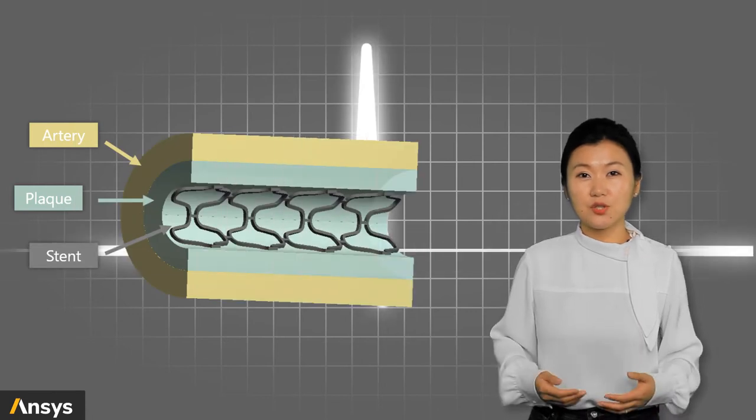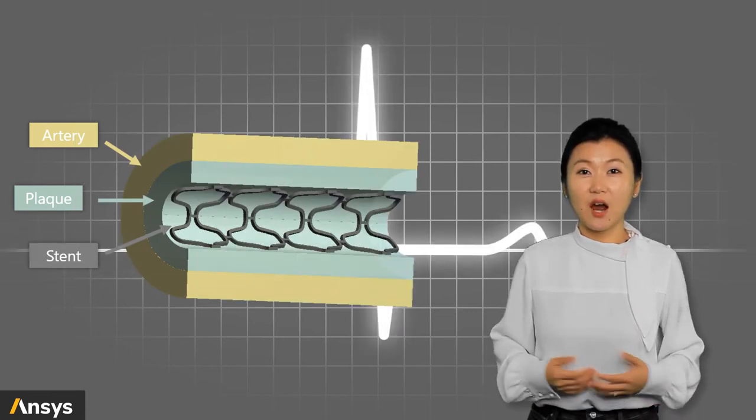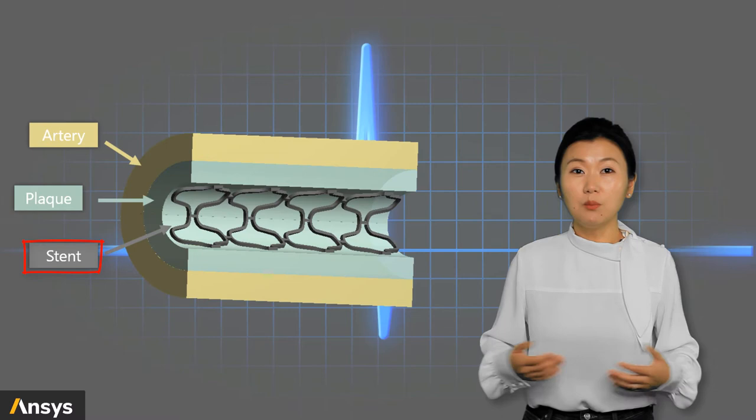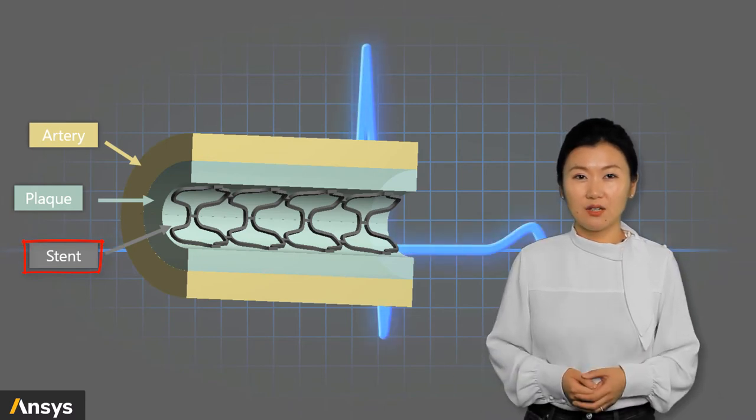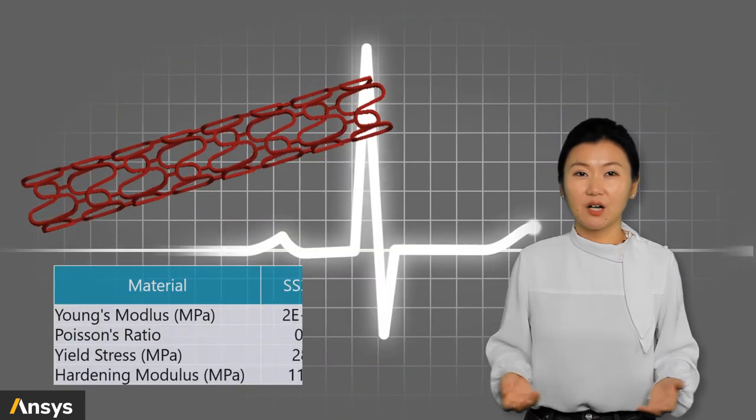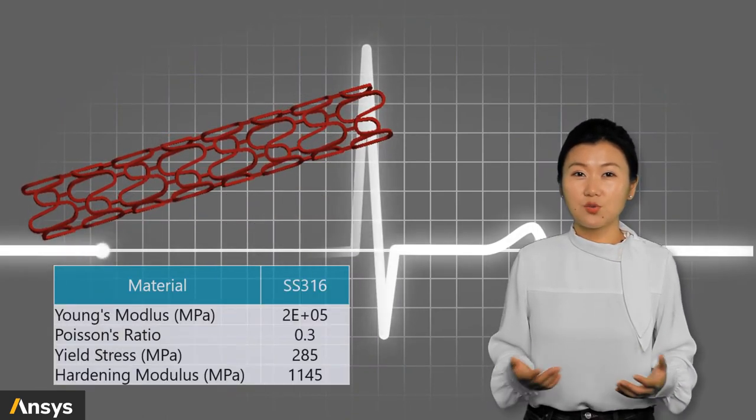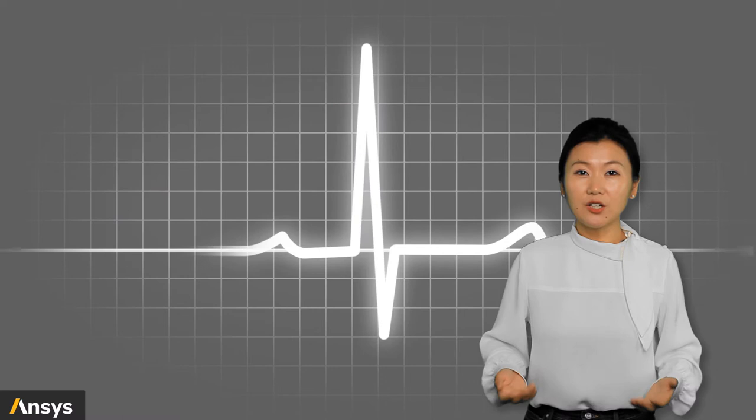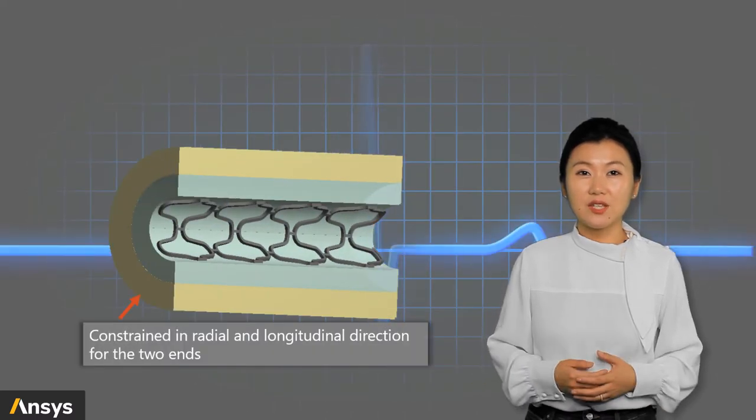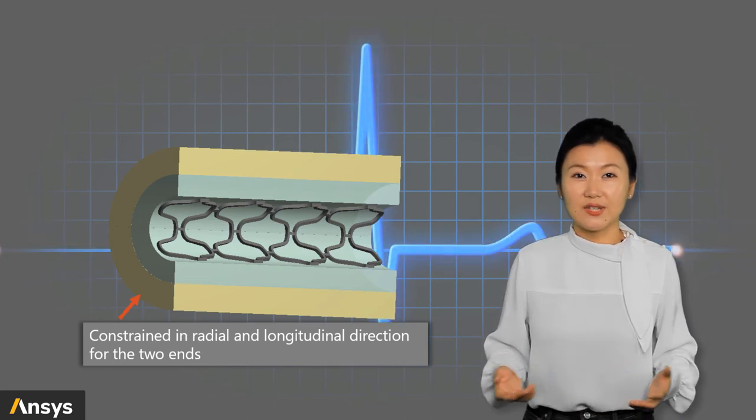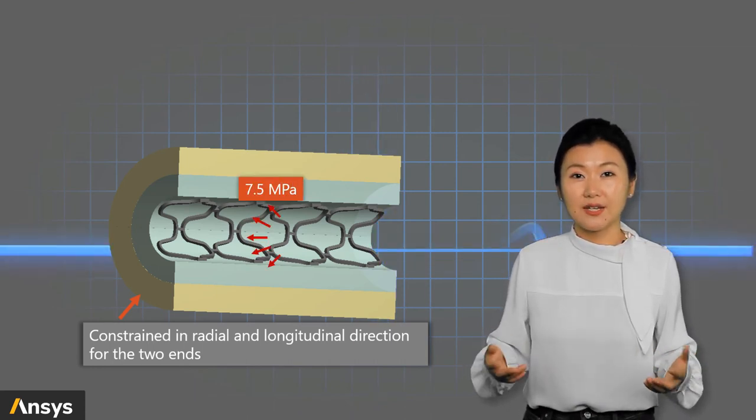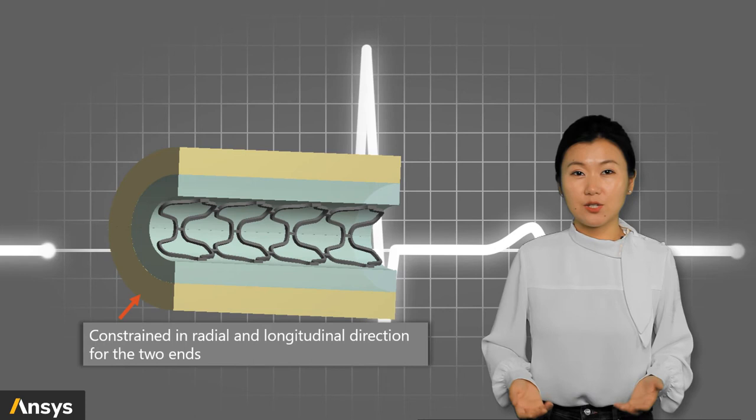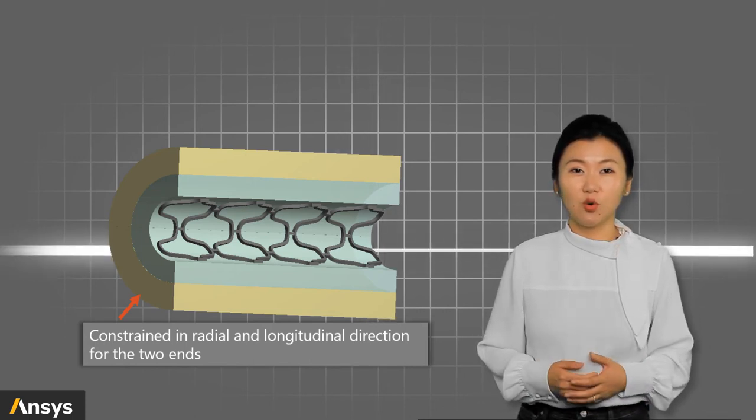Two different material models are used for the system: linear elasticity for the artery and the plaque parts and metal plasticity for the stent. In this case, we are more interested in the behavior of the stent. The stent is modeled as standard stainless steel with bilinear hardening. The Young's modulus, Poisson's ratio, yield stress, and hardening modulus are given for the material. The artery and plaque parts are constrained in the two ends in radial and longitudinal directions. On the inner surface of the stent, a pressure is applied to expand the stent in radial direction in first step. After it reaches the deform shape, the pressure is removed and the system is free to deform to a balanced configuration.